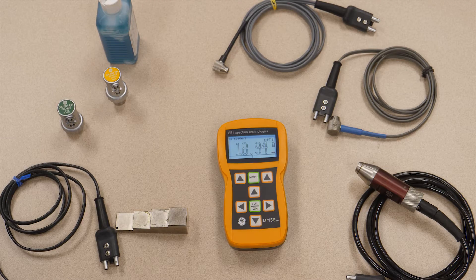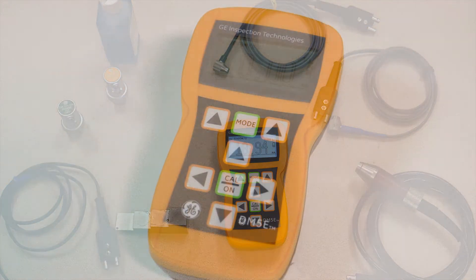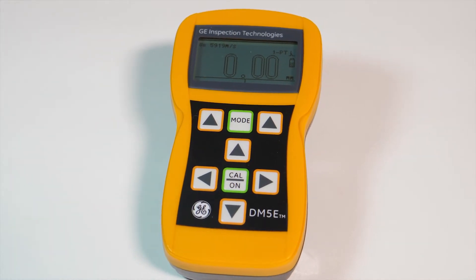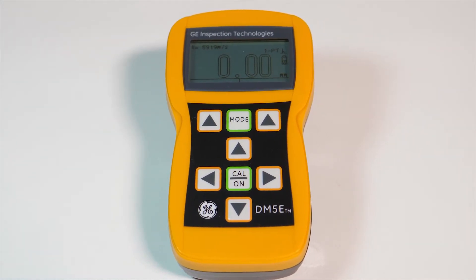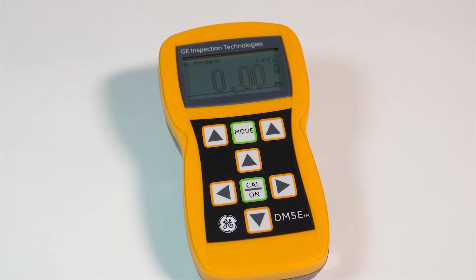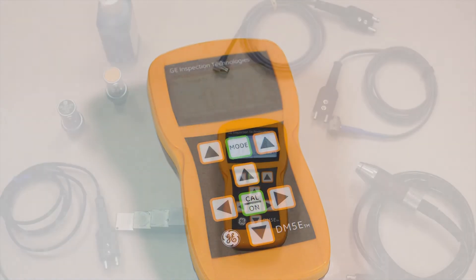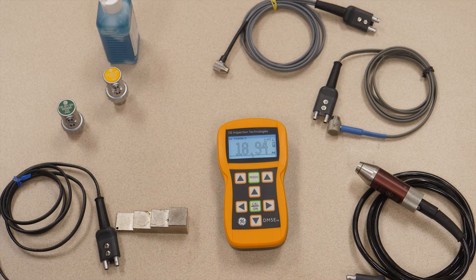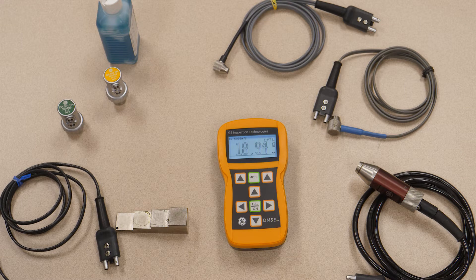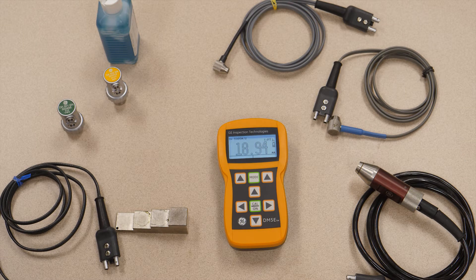Today I'd like to show you a little bit about the DM5E. It's our basic corrosion thickness gauge, typically used for inspecting steel pipe or looking for corrosion in piping, tanks, and other vessels. It has a precision of three decimal places of an inch, two decimal places of a millimeter, so a hundredth of a millimeter or one thousandth of an inch.